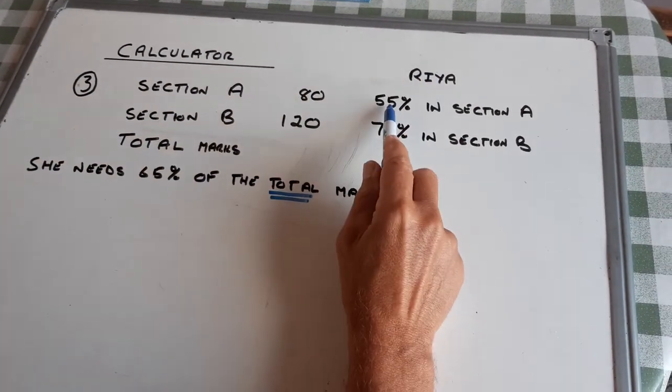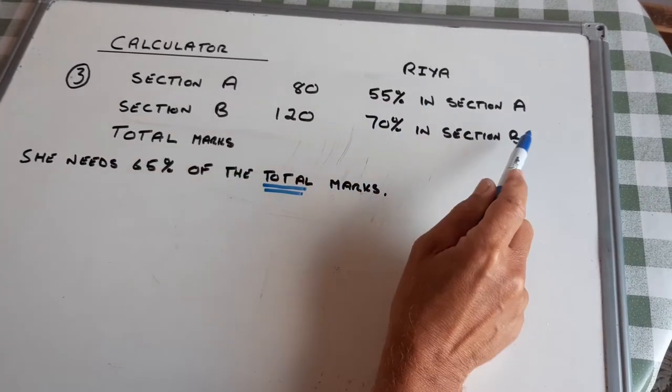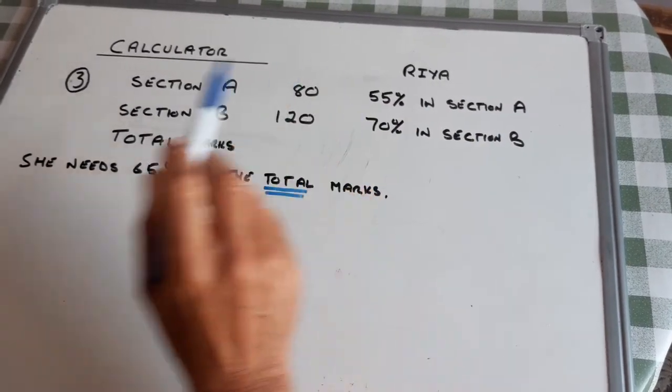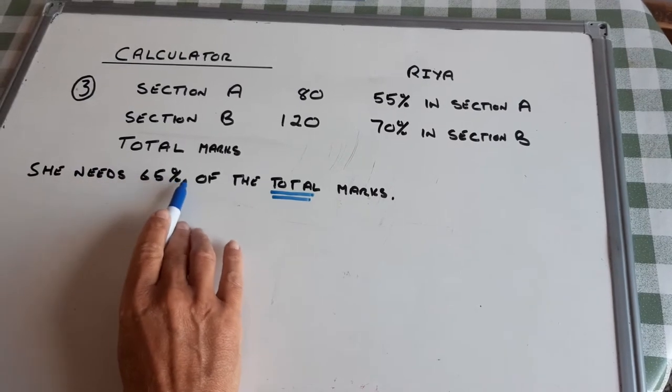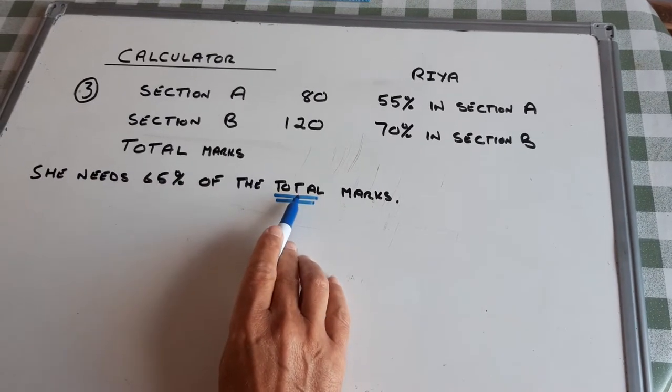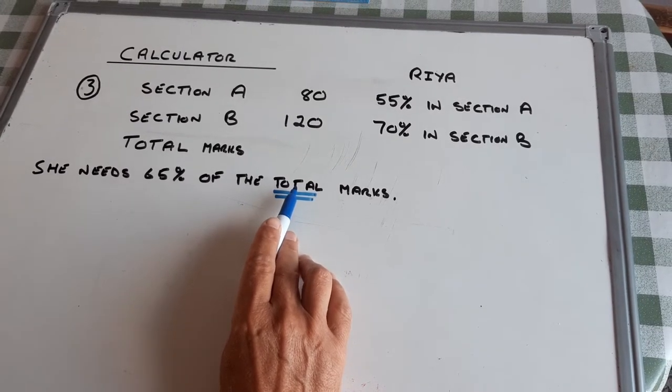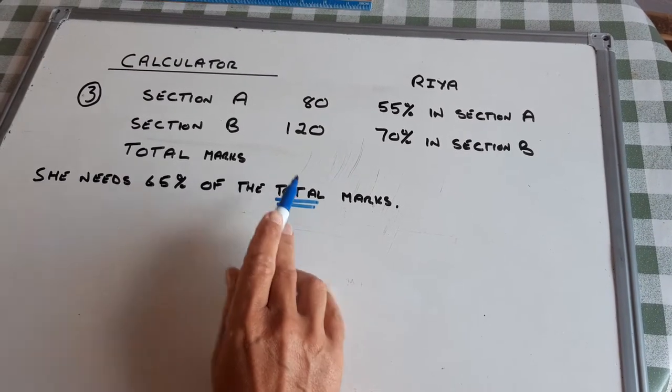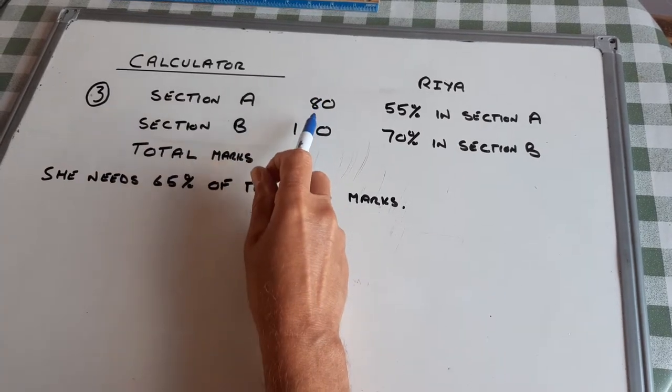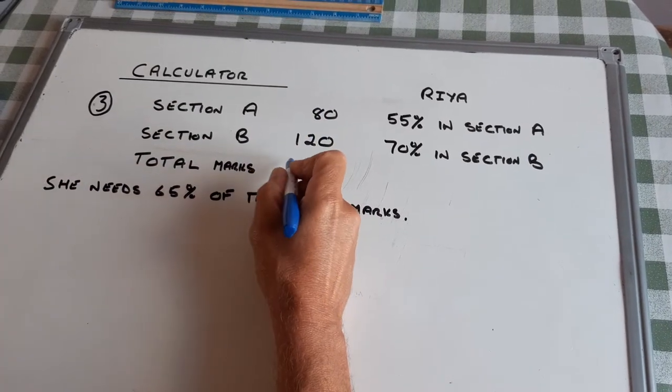She scored 55% in section A, 70% in section B. She needs 65% of the total marks, and that's highlighted. So the first thing I'm going to do is find the total marks. 80 and 120 is 200.